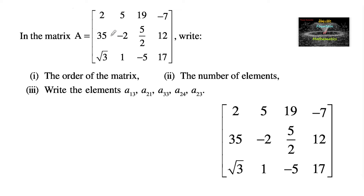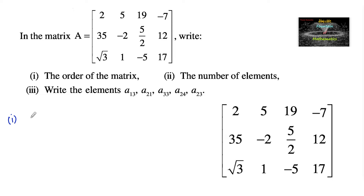In the matrix A equal to [2, 5, 19, -7; 35, -2, 5/2, 12; √3, 1, -5, 17], write the order of the matrix, the number of elements, and find the elements a13, a21, a33, a24, and a23. Let's consider the first one: order of the matrix.